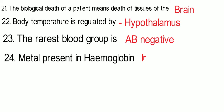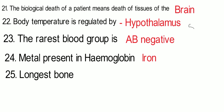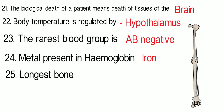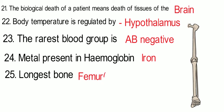The metal present in hemoglobin is iron. Anemia is due to iron deficiency. The longest bone in the human body is the femur, also known as the thigh bone.